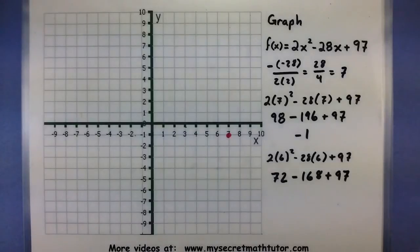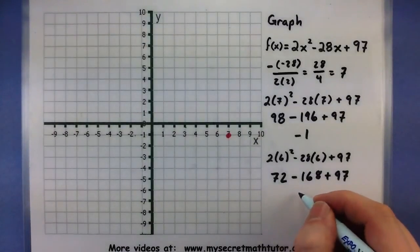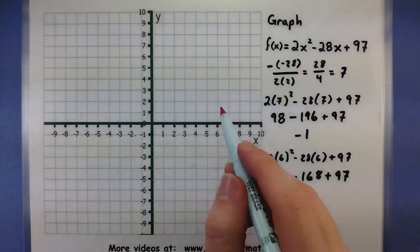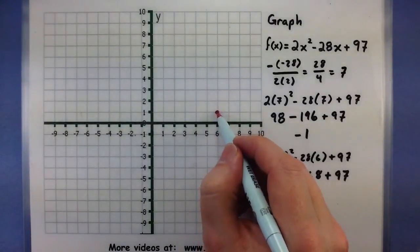So, 168 plus a 97. So, 72 minus 168 plus a 97. And what do you know? All of that is just 1. So, at 6, we're up here at 1.